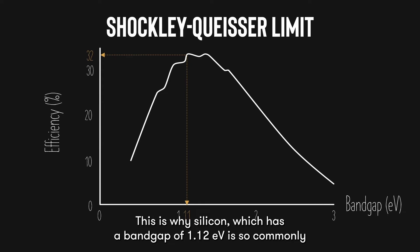This is why silicon, which has a band gap of 1.12 electron volts, is so commonly used as a solar cell material since it's very close to the optimal band gap.